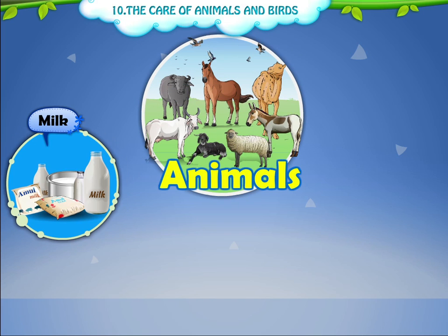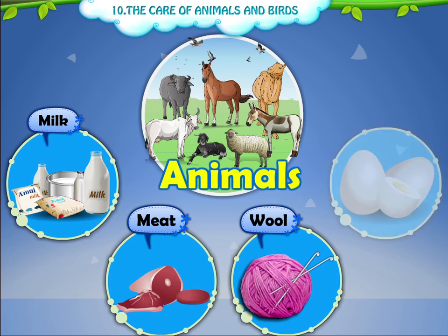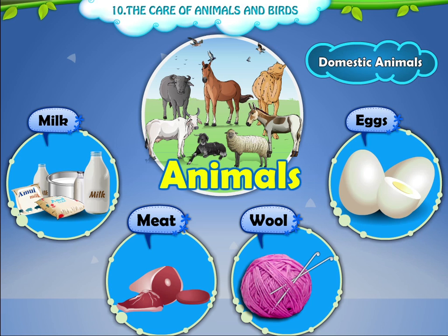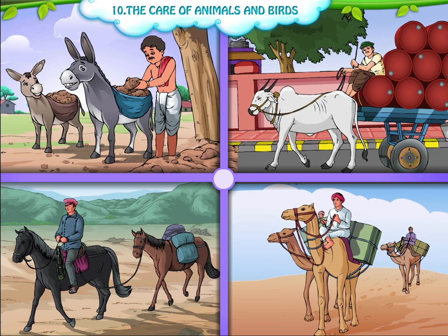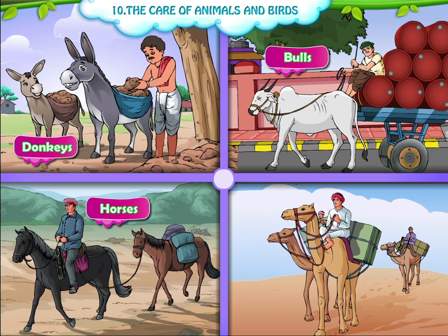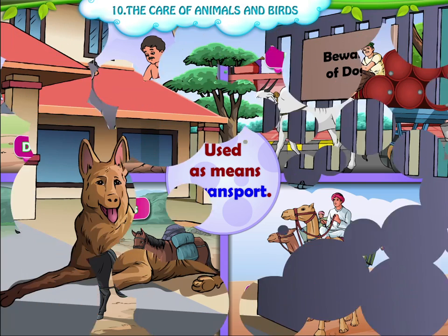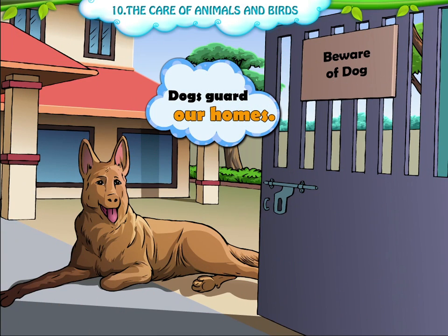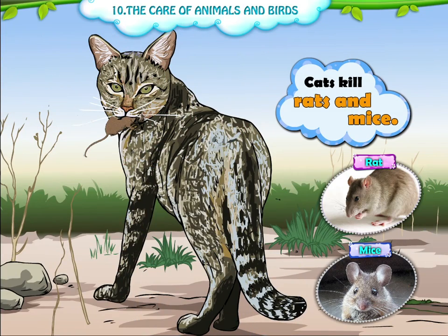We get milk, meat, wool and eggs from domestic animals. Animals like donkeys, bulls, horses and camels are used as means of transport. Dogs guard our homes. Cats kill rats and mice.